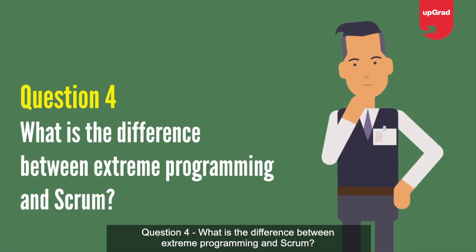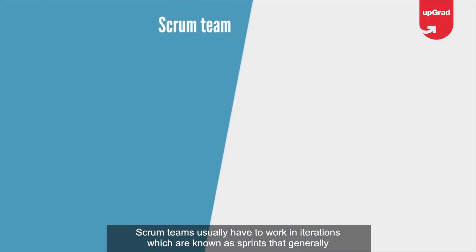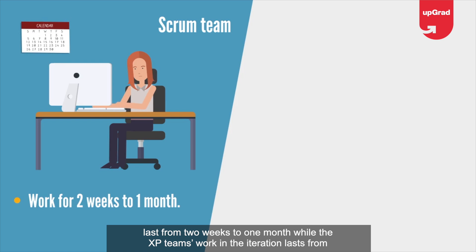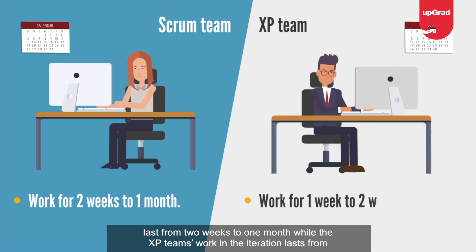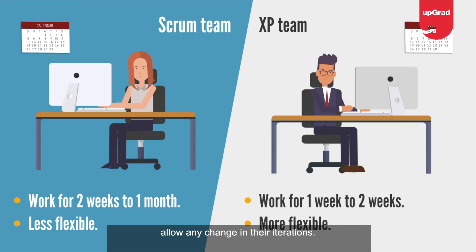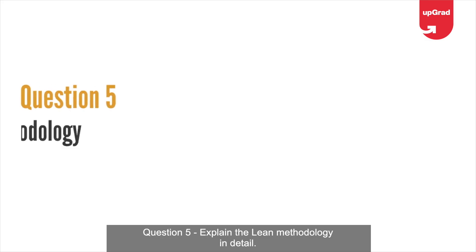Question 4: What is the difference between Extreme Programming and Scrum? Scrum teams usually work in iterations known as sprints that generally last from 2 weeks to 1 month, while XP teams work in iterations that last from 1 to 2 weeks. XP teams are more flexible as they can change their iterations, while Scrum teams do not allow any changes in their iterations.